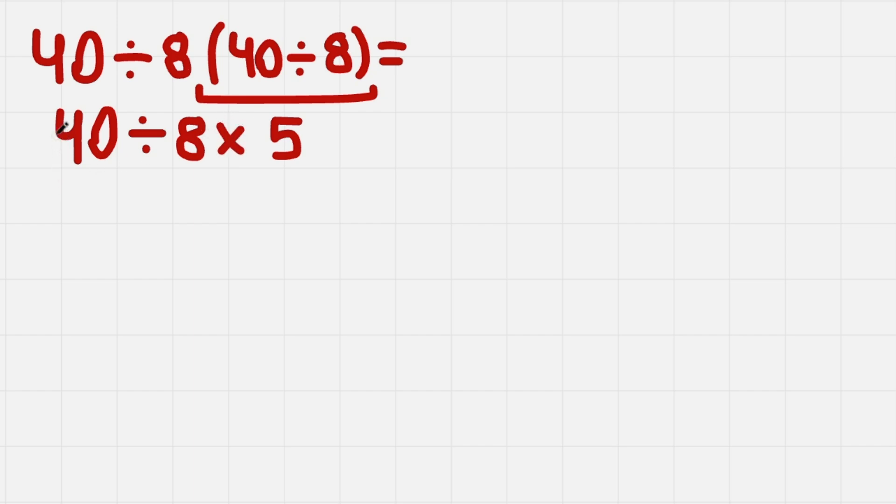So now we do 40 divided by 8. That gives us 5 and we are left with multiplied by 5. So in the end, 5 times 5 gives us 25.